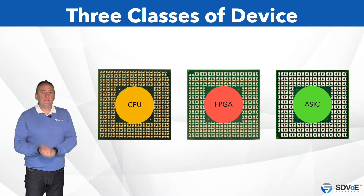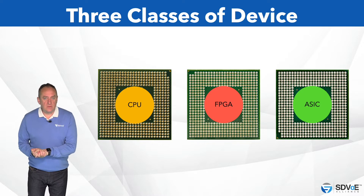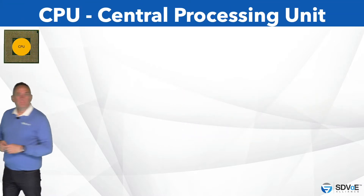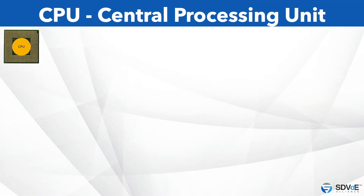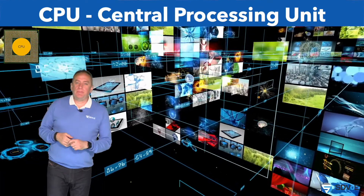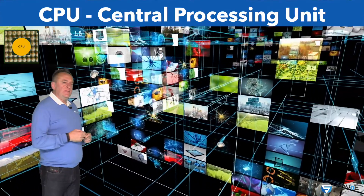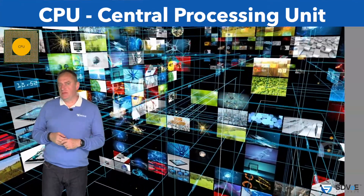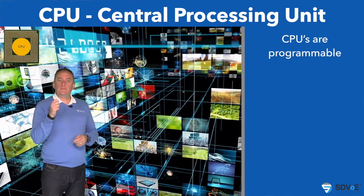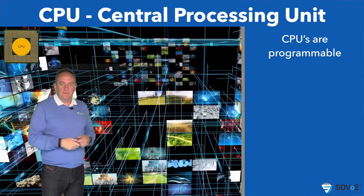To begin with let's discuss probably the most recognized of these three classes, the CPU. Found inside pretty much every computer on the planet, the CPU or central processing unit is arguably the most flexible of our three chips. It's programmable, which means it can run lots of different software applications by responding to a bunch of instructions it's being given.